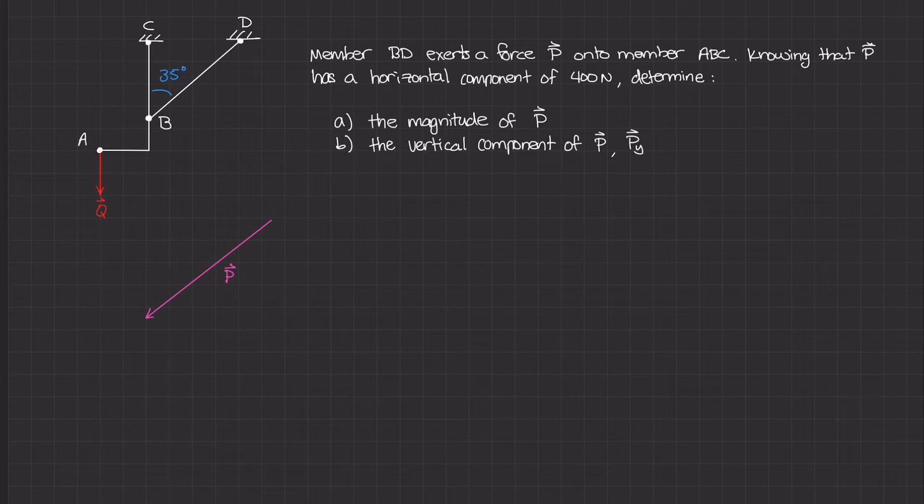The problem states that P has a horizontal component of 400 newtons. So the P force has its horizontal component P sub x acting to the left with a value of 400 newtons.